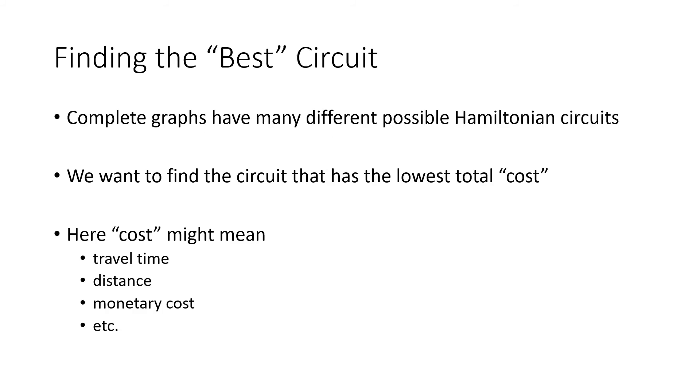So the meaning of that word best can change, right? Because we've got all these different Hamiltonian circuits, we want to find the one that has the lowest total cost, where that word cost doesn't necessarily mean dollars. It doesn't necessarily mean monetary cost. It can mean minimizing the total travel time, minimizing the total distance, or it might mean dollars. We might want to be actually minimizing the total monetary cost.